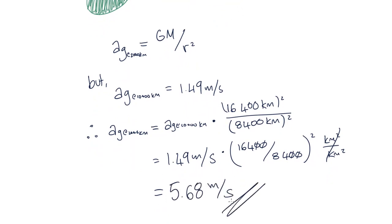So even though the distance of the asteroid at 10,000 kilometers above the surface is about twice the distance of the asteroid at 2,000 kilometers, we get an answer that is much larger than twice that value. This is due to the square of the distance in the denominator.